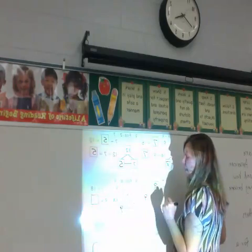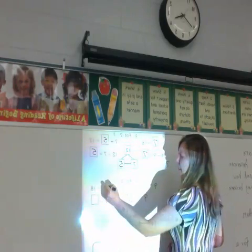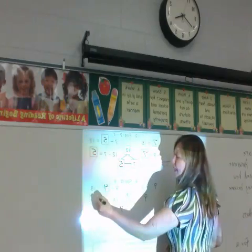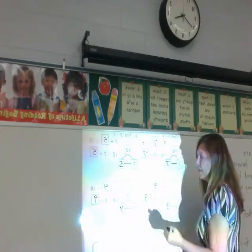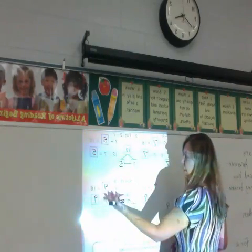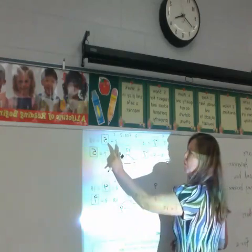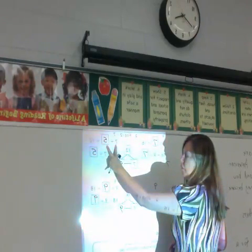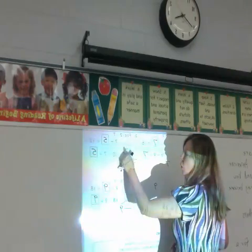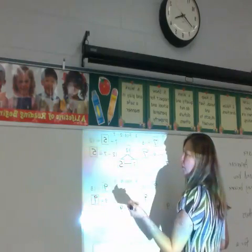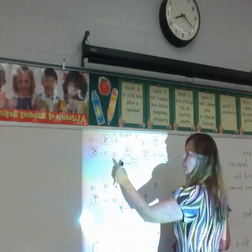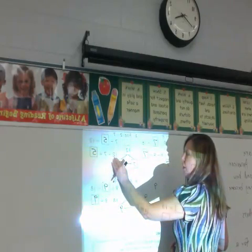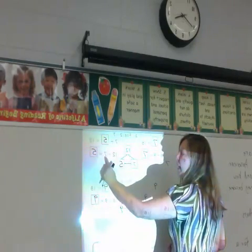18 minus 9 — there's a doubles fact! 18 is the whole, 9 plus 9 is 18, so I know that if I subtract 9 from 18 the difference would be 9. In each problem, both parts are the addends in the addition problem and the whole is the sum. In the subtraction problem, the whole goes first — that's what you're subtracting from — and then the other addend is the difference.